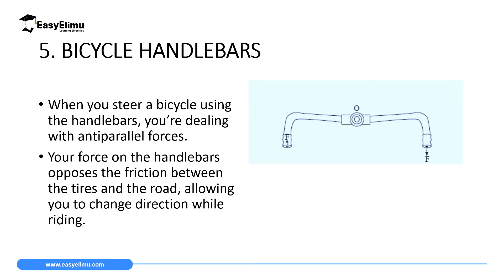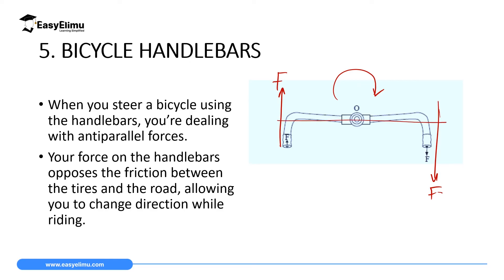Bicycle handlebars also use the idea of a couple to change direction. If you want your bike to turn clockwise, you push the left handlebar up with force F, and automatically the right handlebar moves down with the same force F. If you know the distance between the two handlebars, you can calculate the moment as one of the forces multiplied by the distance between the handlers.